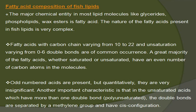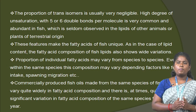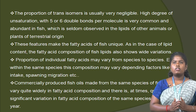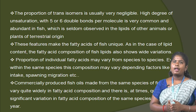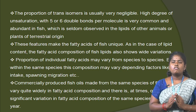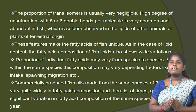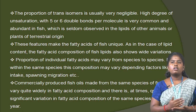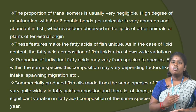Odd-numbered acids are present but quantitatively they are very insignificant. Another important characteristic is that unsaturated acids with more than one double bond have the double bonds separated by a methylene group and have the cis configuration. The proportion of trans-isomers is usually very negligible. A high degree of unsaturation with 5 or 6 double bonds per molecule is very common in fish, which is seldom observed in lipids of other animals, plants or terrestrial algae. These features make the fatty acids of fish unique. As is the case for lipid content, fatty acid composition of fish lipids also shows wide variation, with the proportion of individual fatty acids varying from species to species.